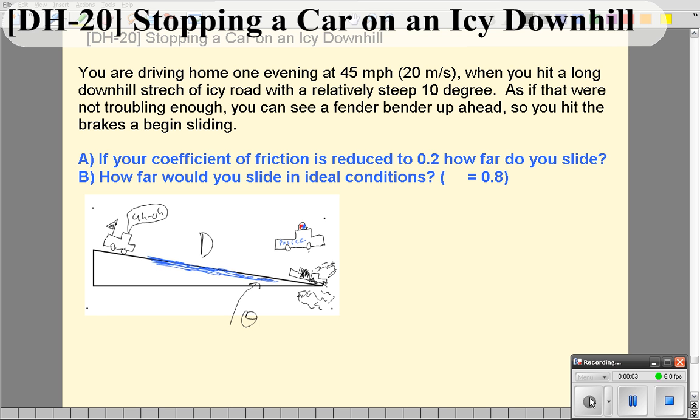Hello and welcome to video 20. Here we have a precarious situation where it's winter time and you're driving down a road with a pretty steep 10 degree hill, which may not sound like a lot but actually is when you're driving. We'll assume you're going 45 miles an hour, which is about 20 meters per second.